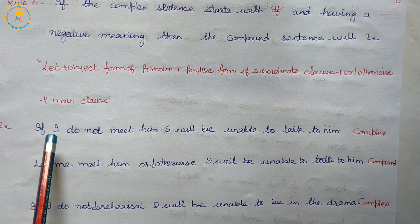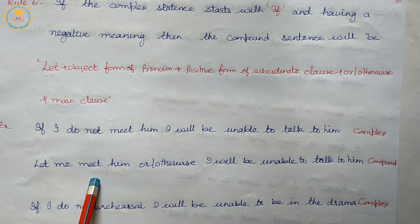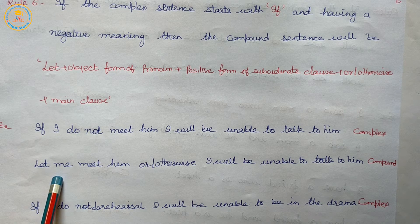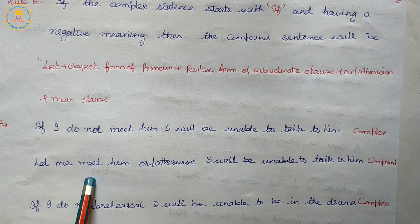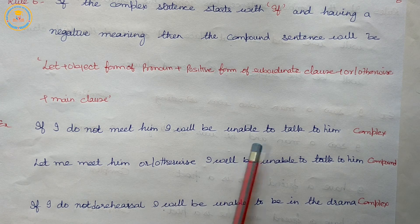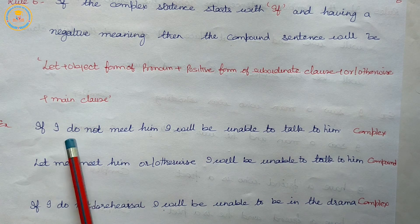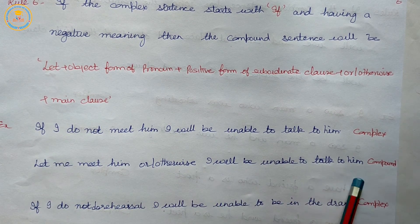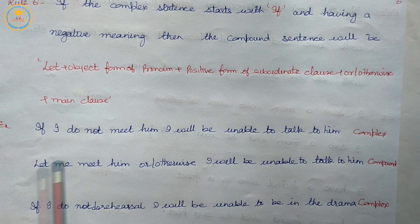Example for rule six: 'If I do not meet him, I will be unable to talk to him' becomes 'Let me meet him or I will be unable to talk to him.' The negative form in the subordinate clause becomes positive after 'let' plus object pronoun.